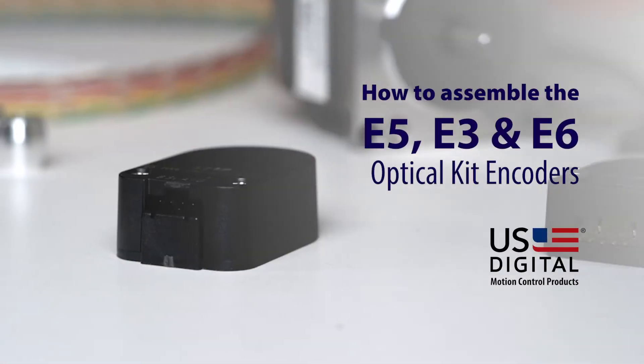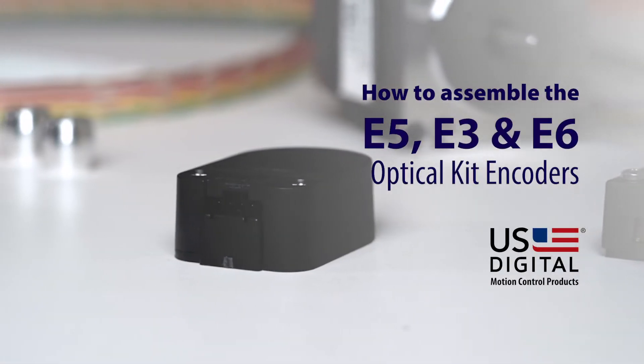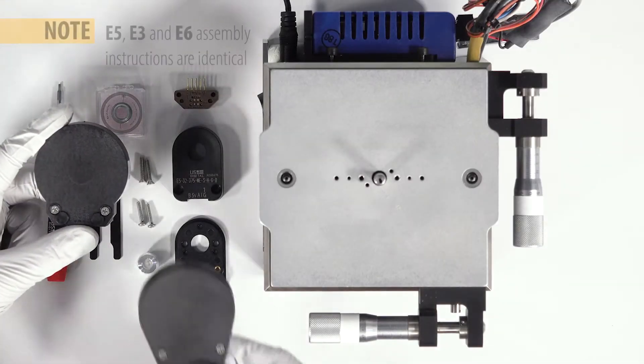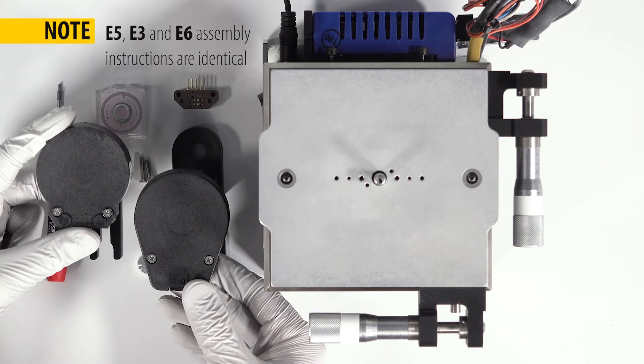In this tutorial, we will assemble the U.S. Digital E5 Optical Kit Encoder. These instructions would also apply to the E3 and E6 kits as well.